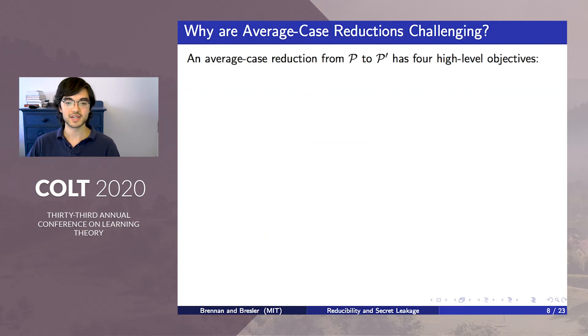So what's holding the reductions approach back? The reason why progress in average case reductions among statistical problems has been slow is that designing these reductions is a heavily constrained task. There are four high-level criteria that a reduction from a problem P to a problem P' must satisfy.